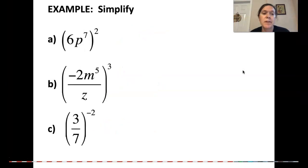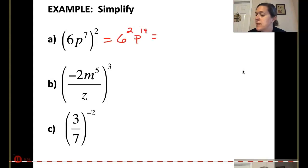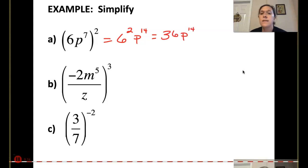Let's step up our game a little bit. Here we have 6p to the 7th, all to the 2nd power. So that's going to become 6 squared times p to the 14th — 7 times 2. 6 squared is 36, so it's 36p to the 14th.